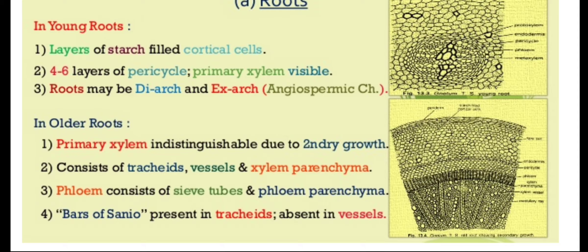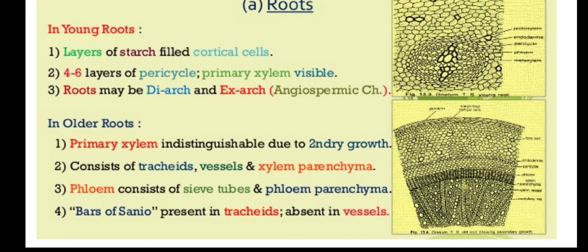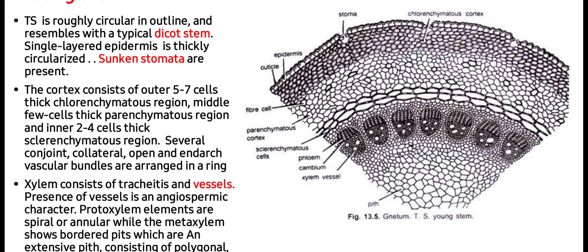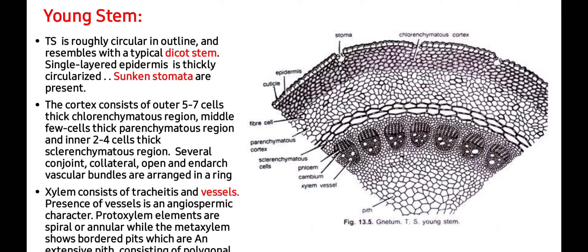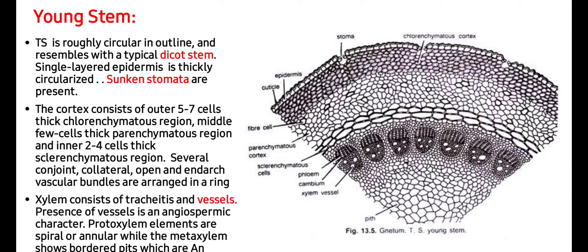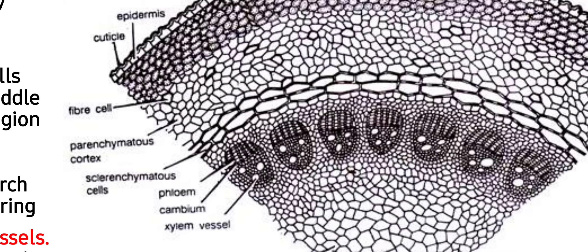Phloem consists of sieve tubes and phloem parenchyma. Bars of Sanio are present in tracheids while they are absent in vessels. Bars of Sanio and bordered pits are characteristic features of gymnosperms. In the young stem, the transverse section is circular in outline and resembles a typical dicot stem. It has a single-layered epidermis that is thickly cuticularized and bears sunken stomata. The cortex consists of outer 5 to 7 cells with a thick chlorenchymatous region, middle parenchymatous cells, and an inner sclerenchymatous region.